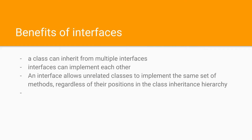The benefits are that a class can inherit from multiple interfaces, because a class can only extend one other class but it can implement multiple interfaces. And interfaces can implement each other if that's what you want to do. A benefit I like very much is that an interface allows unrelated classes to implement the same set of methods, regardless of their positions in the class inheritance hierarchy. So if you have two classes and one extends the other, you can still have both of them implement the same interface.